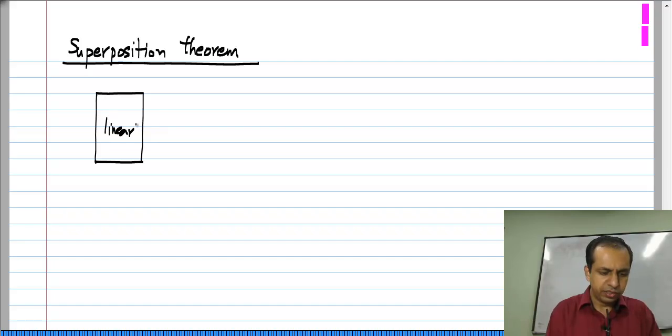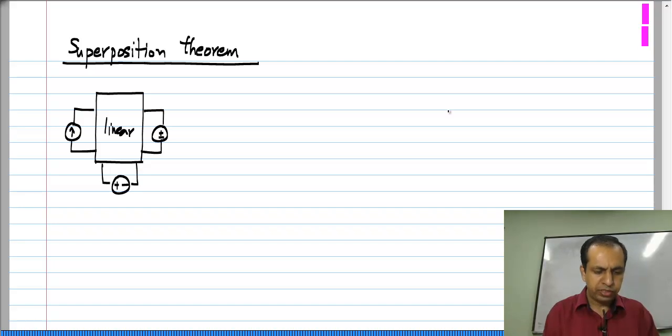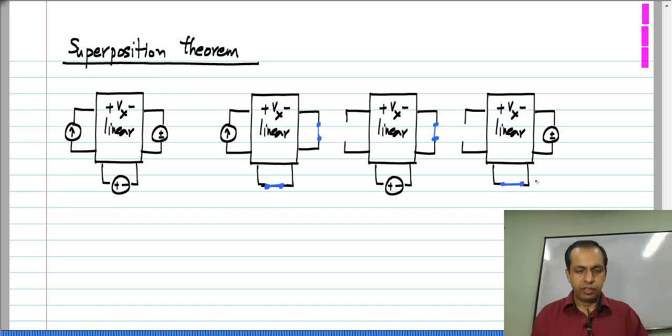So, let us say this is the linear part of the circuit, that is it has resistors and linear control sources, and there are three independent sources. Just for simplicity sake, I will consider this. What I had said earlier was, let us say I have to measure V_x somewhere in the circuit. Then, I will think of it as some of these three cases.